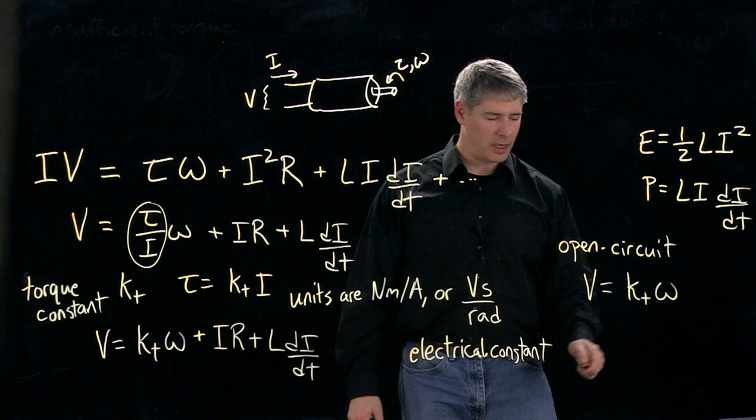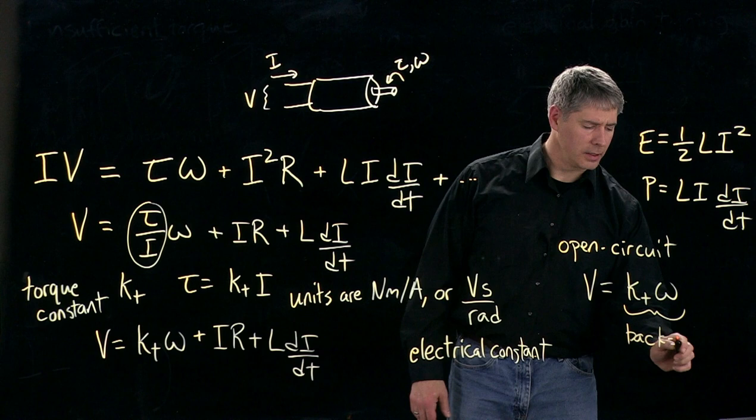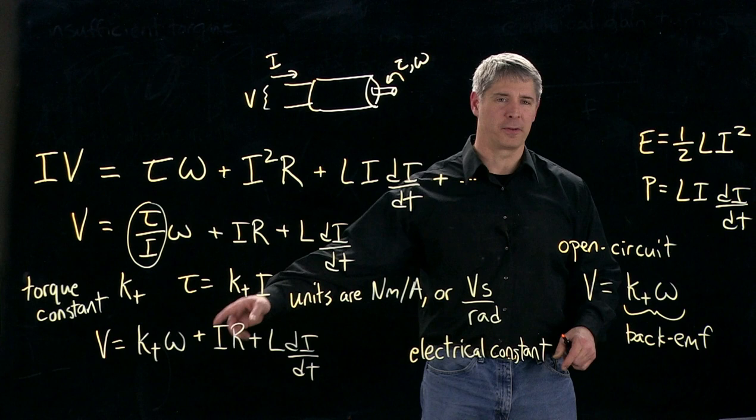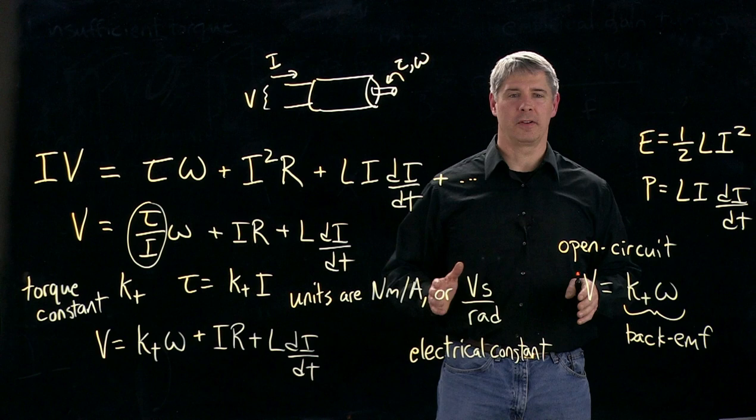So when we write it like this, often we call this term the back EMF or back electromotive force. EMF just means voltage, back voltage. So when we see it in an equation like this over here, this voltage is essentially opposing the input voltage and therefore reducing the amount of current that flows through the motor. And it also tells us how much voltage we generate here when we leave it open circuit and just spin the output shaft.